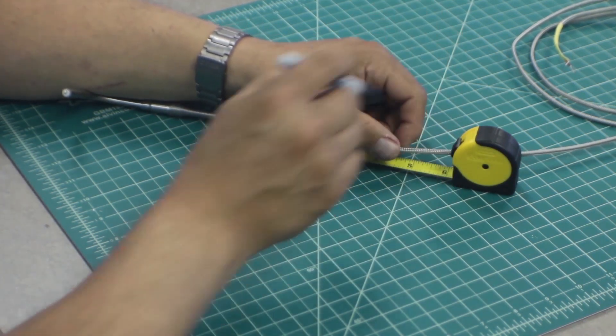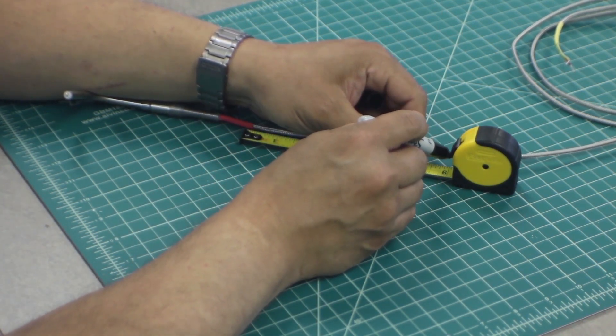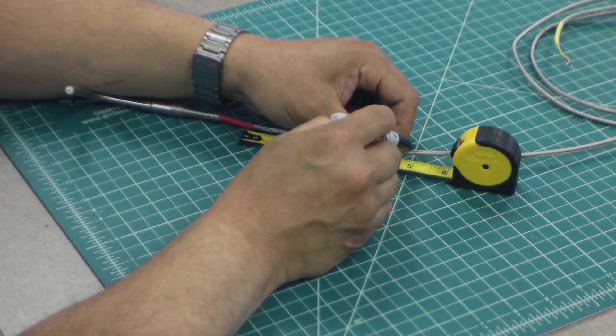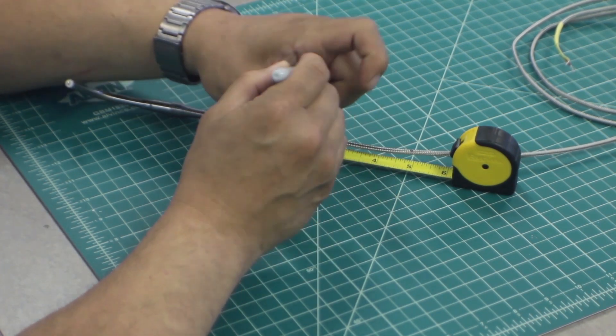Next, measure the desired length of the cable and mark with the permanent marker. Make another mark approximately one inch from the first mark.